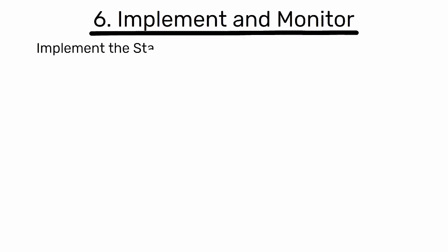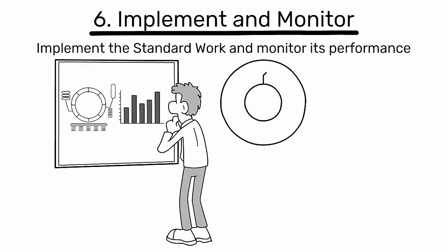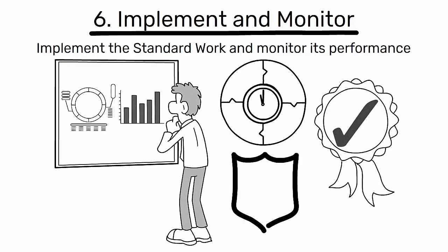6. Implement and monitor. Implement the standard work and monitor its performance. This could involve tracking metrics like cycle time, quality, and safety incidents.